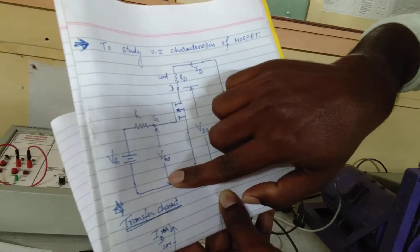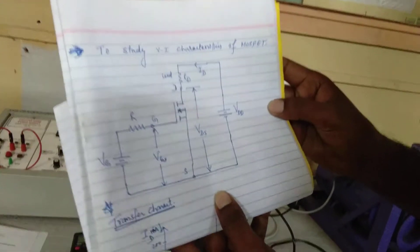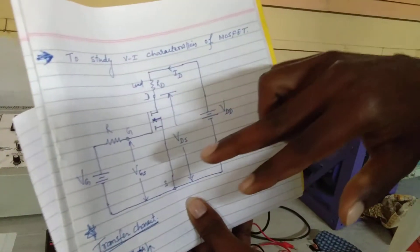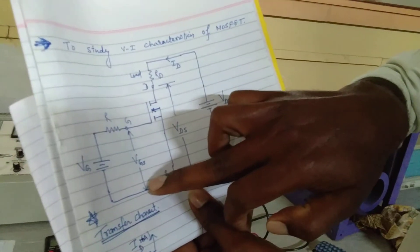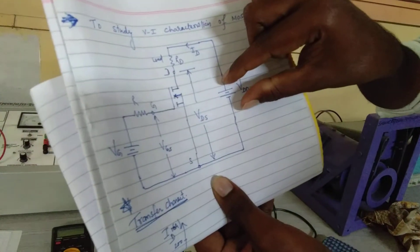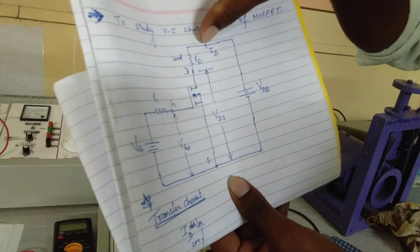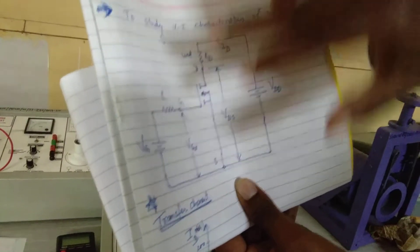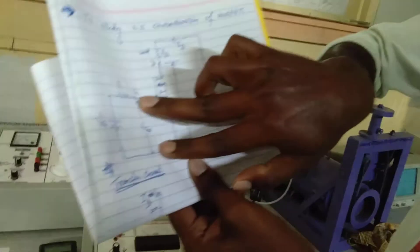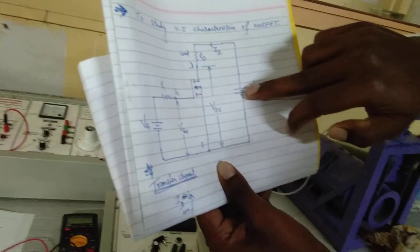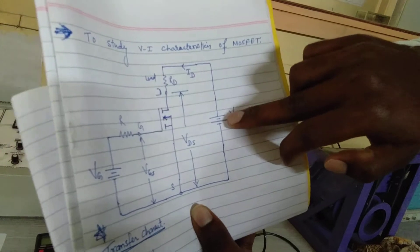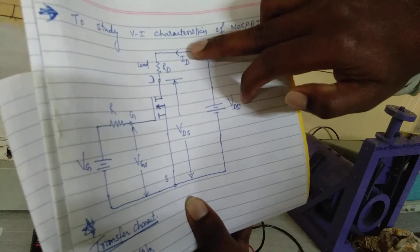We can obtain two characteristics: one is the output characteristics and the second is the transfer characteristics. To obtain the output characteristics, we keep the gate-source voltage constant and vary the drain-source voltage VDS, noting down the readings of drain current ID.